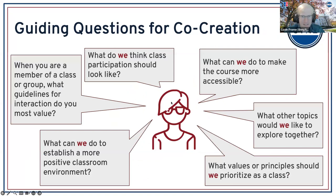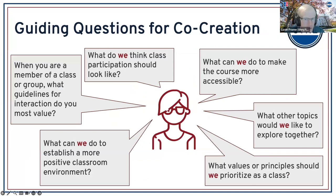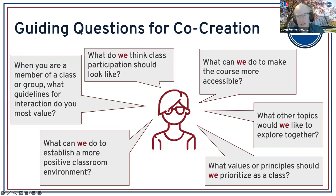Here are some guiding questions you might consider asking students when beginning to co-create — fairly broad but not too broad, specific but not too specific. 'What do we think class participation should look like?' 'When you are a member of a class or group, what guidelines for interactions do you most value?' 'What can we do to establish a more positive classroom environment?' 'What can we do to make the course more accessible?' 'What other topics would we like to explore together?' 'What values or principles should we prioritize as a class?' You'll notice we've highlighted the word 'we' — because the emphasis is that this is a collective enterprise. You, the instructor, and the students are a single unit, partners working to achieve a common set of goals.